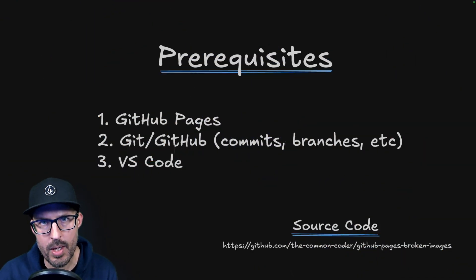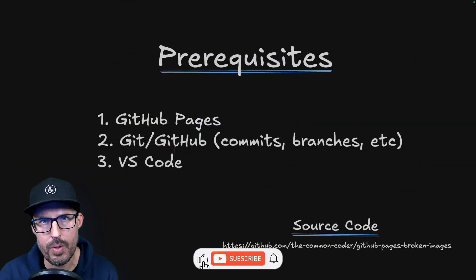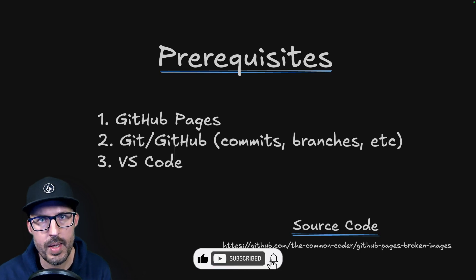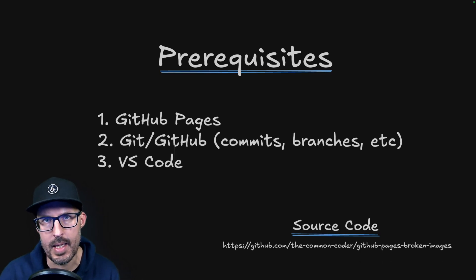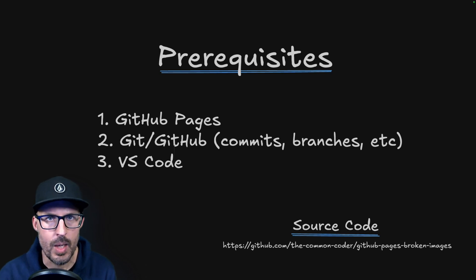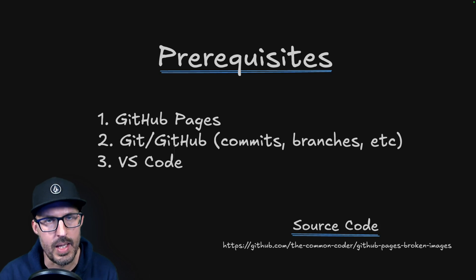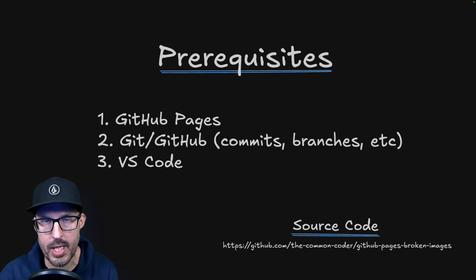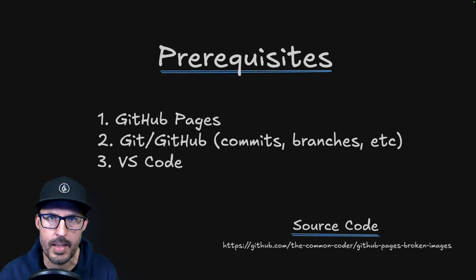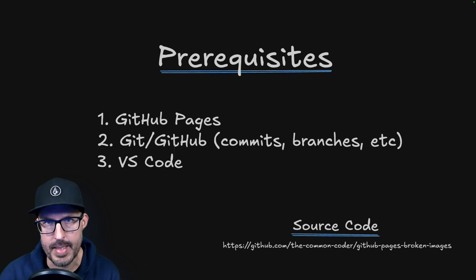Before we get started, there are a couple of prerequisites to follow along with this video. The first is that you'll need a basic understanding of GitHub Pages. I'm assuming you have a site that's up on GitHub Pages, it works locally on your machine, but when you deploy it to GitHub Pages, the images don't work. You just need to know how to make changes, push those changes up to GitHub, and then redeploy your site.